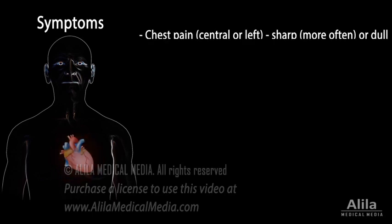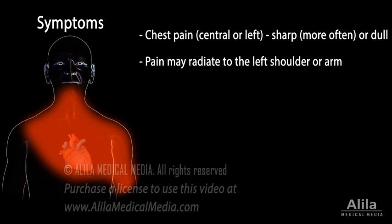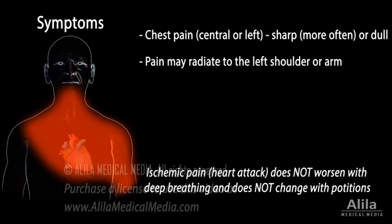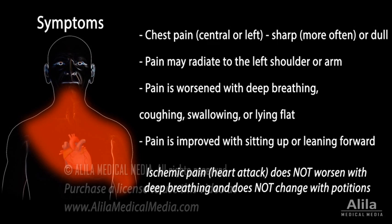A typical symptom of acute pericarditis is chest pain, which can be sharp or dull. The pain may radiate to the left shoulder or arm, similar to that of a heart attack or ischemia. Unlike ischemic pain, however, pericardial pain is worsened with deep breathing, coughing, swallowing, or lying flat, and improved with sitting up or leaning forward.